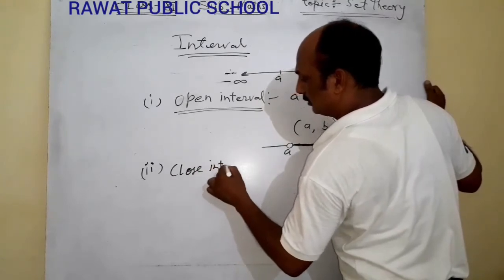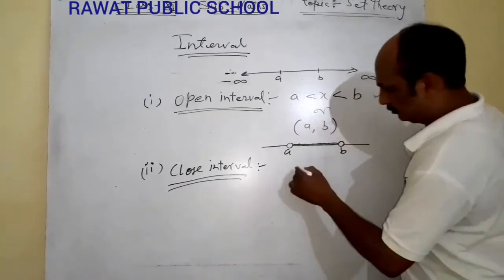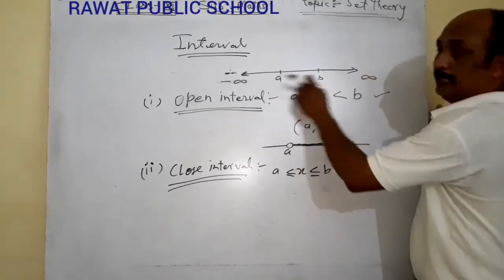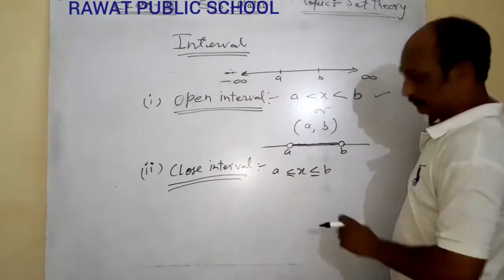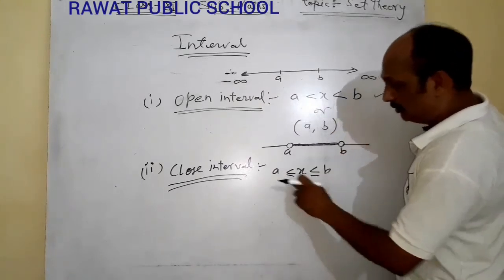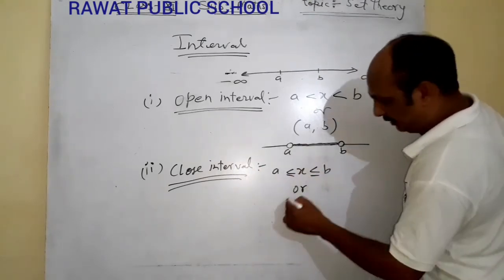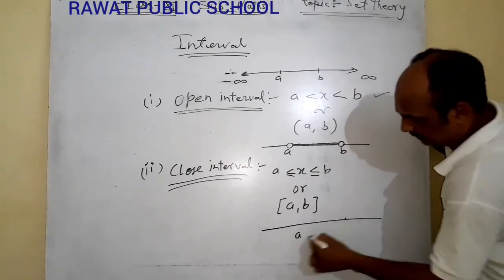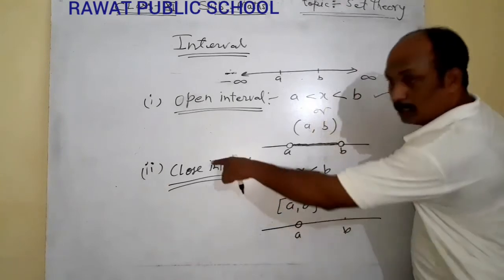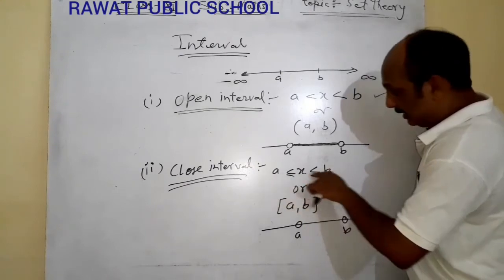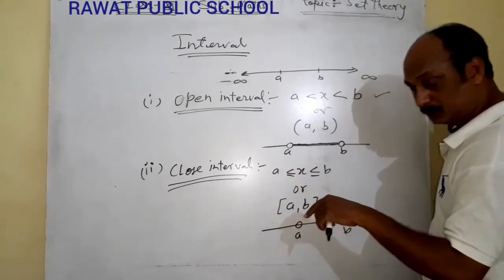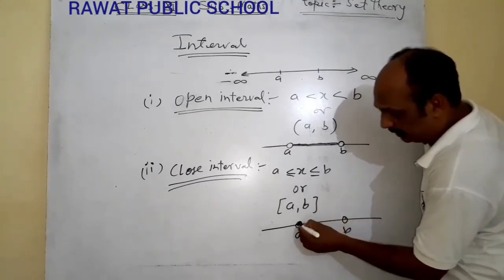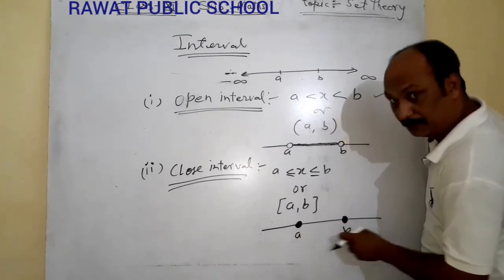Same as our second condition is close interval. In close interval, we select a number in between A and B on the number line. This is representation of close interval. We can represent close interval like this in big bracket [a, b]. This is A and this is B.